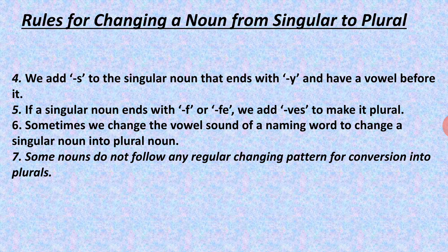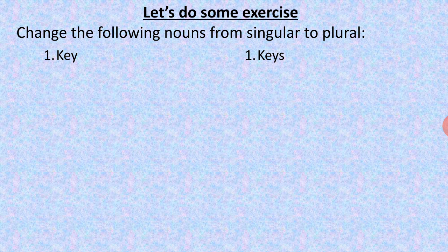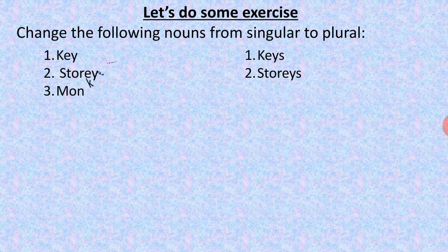Now let's move to the exercise. We will discuss these four rules through the exercise. 'Key' — k-e-y. The last letter is 'y' and before 'y' there is a vowel, so applying the fourth rule: k-e-y-s — 'keys'. If there is a vowel before 'y', we add 's'. Then 'story' — same rule, add 's'. Then 'monkey' — same rule applies, it has 'k-e-y', so we add 's'.